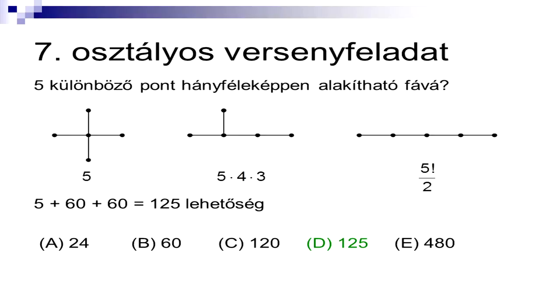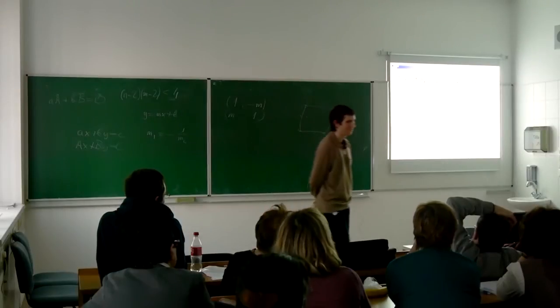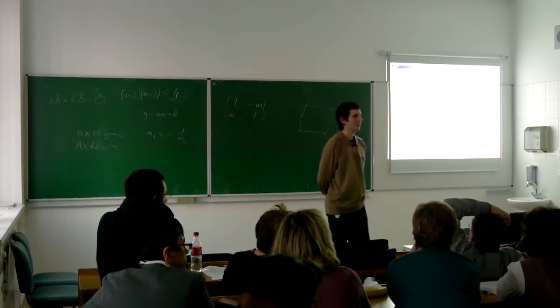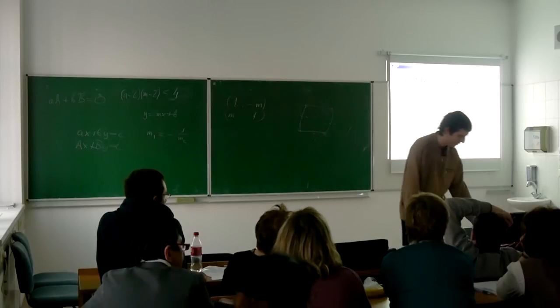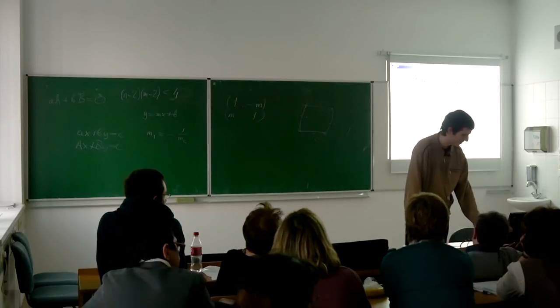Ez nyilván ötféle lehet, mert csak az számít, hogy melyik város van középen. Itt ötféleképp választhatom ki ezt a csúcsot. Négyszer háromféleképp ezt a másik kettőt. Az utakból pedig 5 faktoriális per kettő van, hiszen az ABCDE meg az EDCBA út gráfelméletileg ugyanazt adja. Ezt ha összeadjuk, akkor 5 meg 60 meg 60, vagyis 125 lehetőség adódik. Tehát a D volt a helyes válasz. A szervezők kiadják mindig a statisztikát, hogy hány százalék mit jelölt meg. Mindössze 7 százalék találta el a helyes választ, és 50 százalék üresen hagyta.